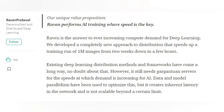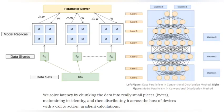Currently, data and model parallelism is being used by big companies, but it still faces latency network issues and is not scalable beyond a certain limit. That's where Raven Protocol comes in. Raven Protocol solves the latency problem by chunking the data into very small bytes and distributing it across different devices. This is known as gradient calculation.